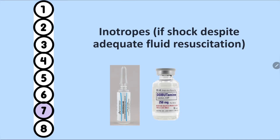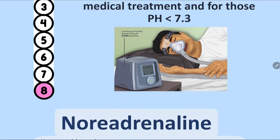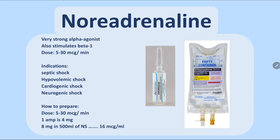If the patient is in cardiogenic shock and does not respond to management, start noradrenaline — the best choice — or dopamine or dobutamine. If the patient does not respond to maximal therapy and ABG shows pH less than 7.3, call the ICU or anesthesia team to assist with CPAP, which is very helpful in severe dyspnea or acidosis.